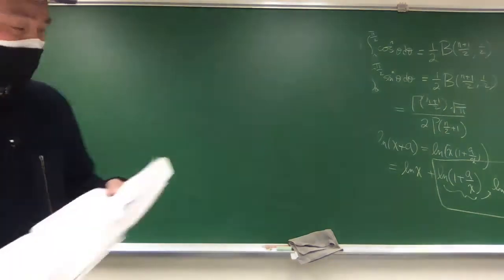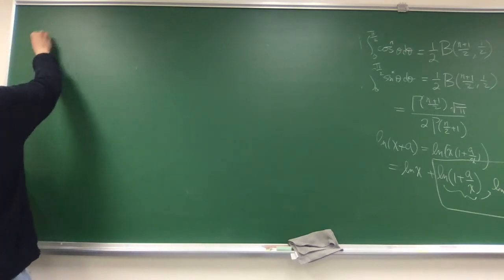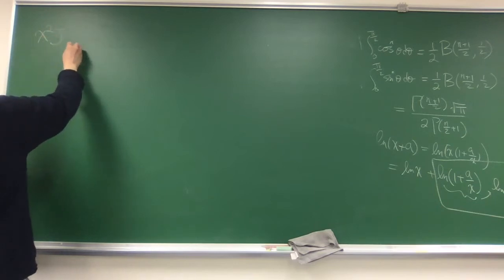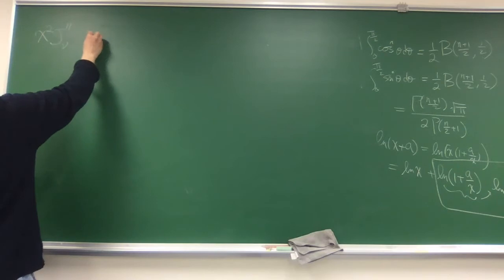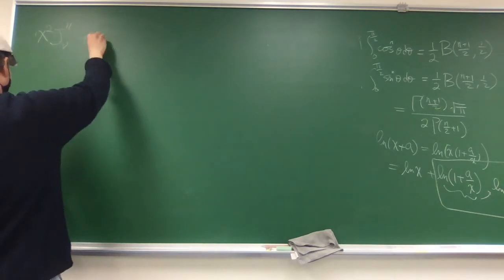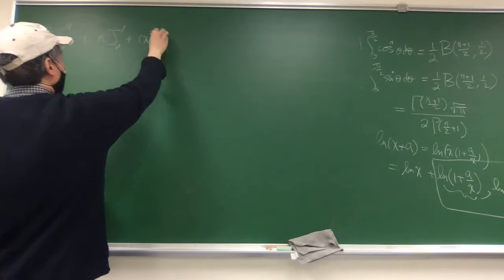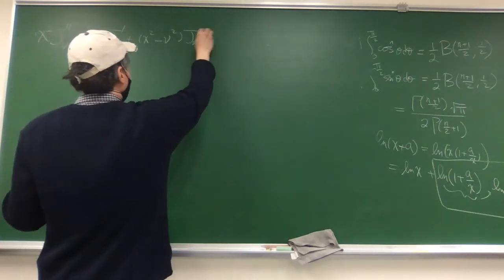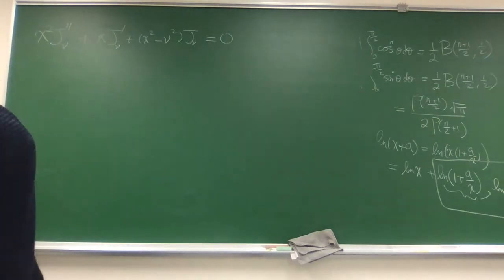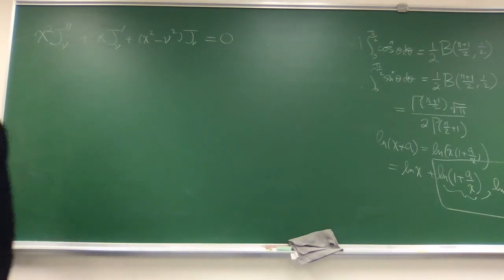We'll do it another way, assuming you know the series expansion — the series solution — and show that the generating function will give you the same series solution. So just write down the Bessel equation in this order: J sub nu, the argument is x, so we're just not writing the argument out explicitly.